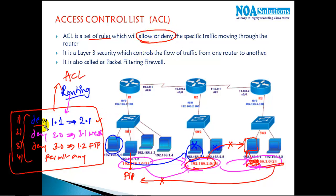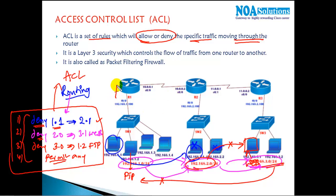If you say deny, it will deny; if you say permit, it will permit — it all depends on how you write the rules. ACLs filter selected traffic, meaning selected hosts, selected devices, or selected services moving through the router. We implement ACLs on the router, so the traffic must pass through the router.